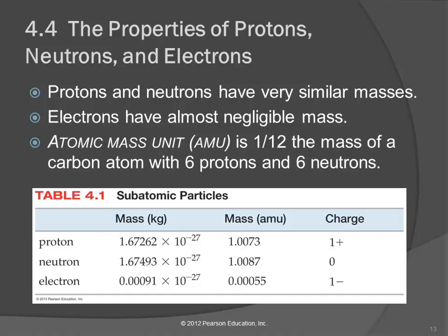And then we have the electron. The electron is much smaller in mass than the protons and the neutrons. It's easier to look at the atomic mass units. It's 0.00055 compared to them being 1. So the mass is much smaller. The charge is negative 1.